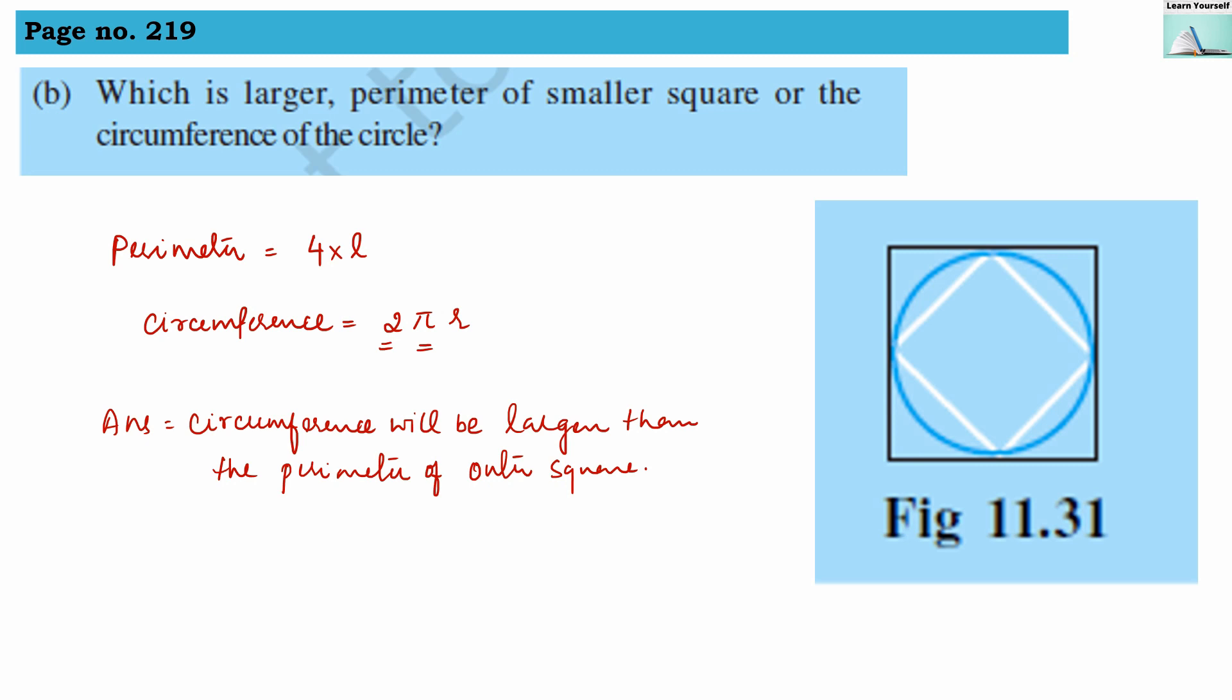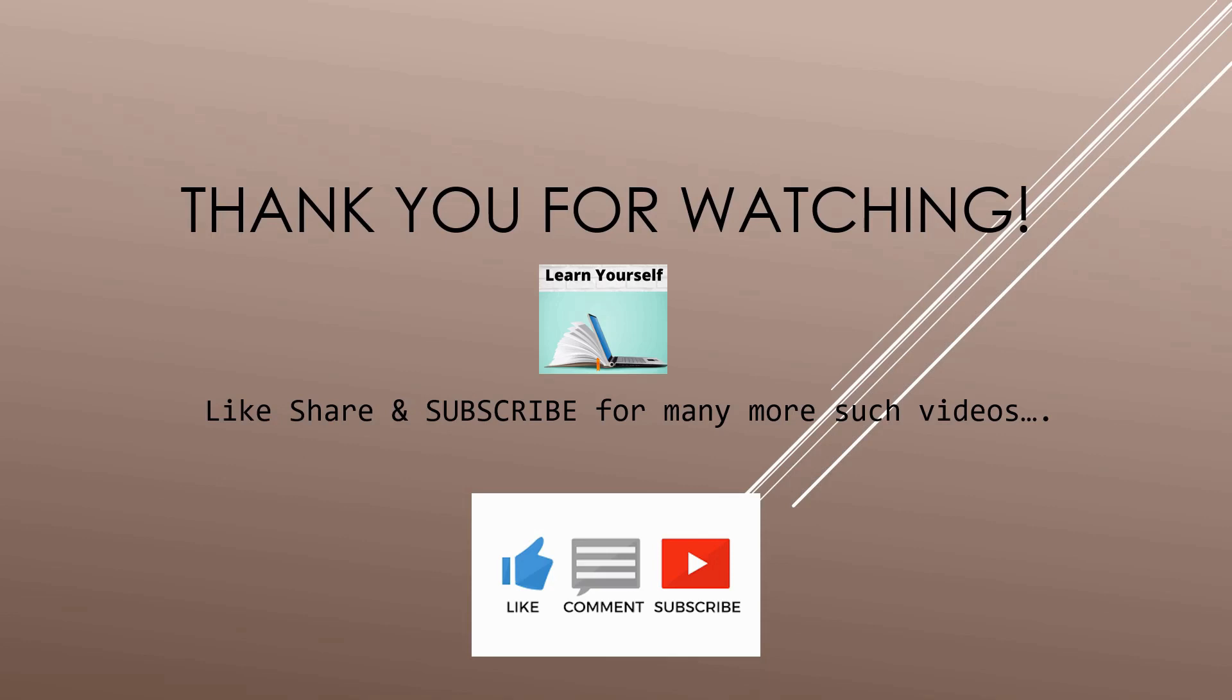If you want to calculate, you can just locate a center here and you can find out this radius. Once you measure this, you will get the radius and then you can find out the circumference of the circle. And then you can compare it with perimeter of outer square.